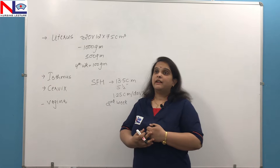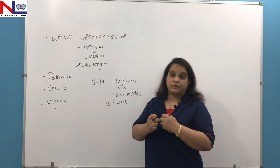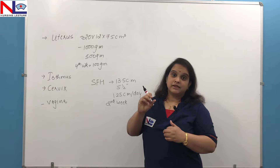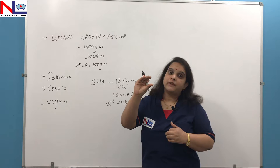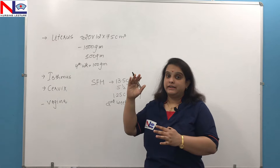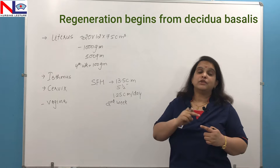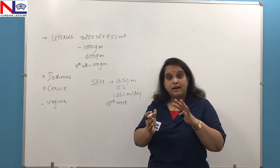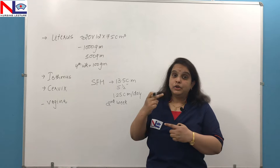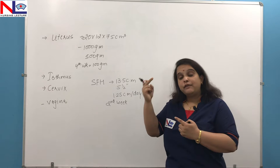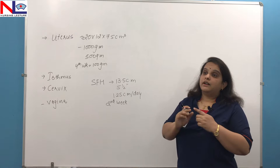In the uterus, changes take place in the muscle fibers, the endometrium, and the blood vessels. There is continuous hypertrophy and hyperplasia in the muscle fibers of the uterus during pregnancy. When the height of the uterus reduces, it doesn't mean that the number of cells is reducing — only the size of the muscle fibers is reducing. With the delivery process, the decidua — the endometrial lining — is removed. So there is regeneration of this endometrial lining, beginning from the decidua basalis, because the decidua is formed from the functional layer which is usually removed. The new layer forms from the basal layer of the endometrium — the stratum basalis, or decidua basalis, gives rise to the new endometrial lining.